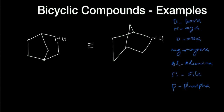So let us come back to this example. We have to start the numbering from the bridgehead: 1, 2, 3, 4, 5, 6, 7. The reason we did not go counterclockwise from the bottom is because if you start from the bottom, then the nitrogen gets position 2, so that is more preferred.